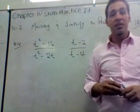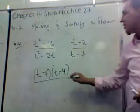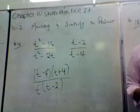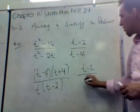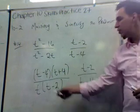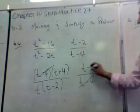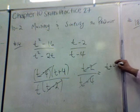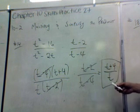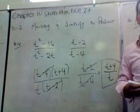t² minus 16 factors as (t - 4)(t + 4). Below, the common factor t divides out to give t(t - 2), then we also have (t - 2) and (t - 4) in the other fraction. Because this is multiplication, (t - 4) cancels with (t - 4), and (t - 2) cancels with (t - 2), leaving us with (t + 4) over t as the final answer. Don't be tempted to cancel the t into the (t + 4) — that's not possible because (t + 4) is its own entity.